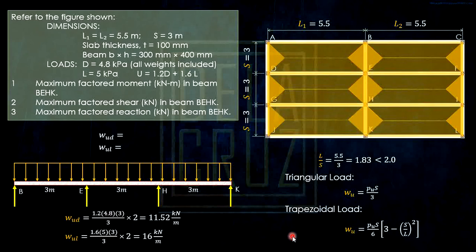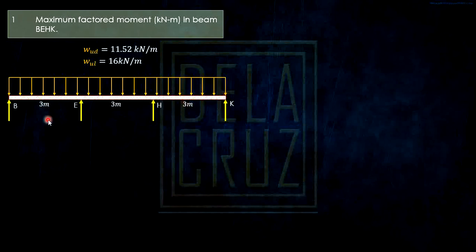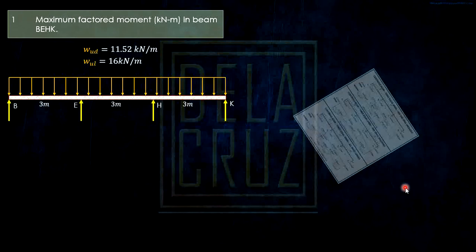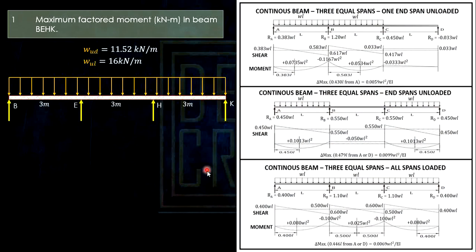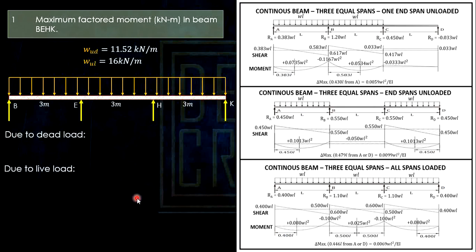Now we have the data and we will consider beam BEHK. This is the pattern loading given. For pattern loading we isolate the dead load and live load and find the most critical or maximum combinations of moments in the beam. For dead load, we must load all spans because dead load is present throughout all parts of the beam — it cannot be absent at any span.